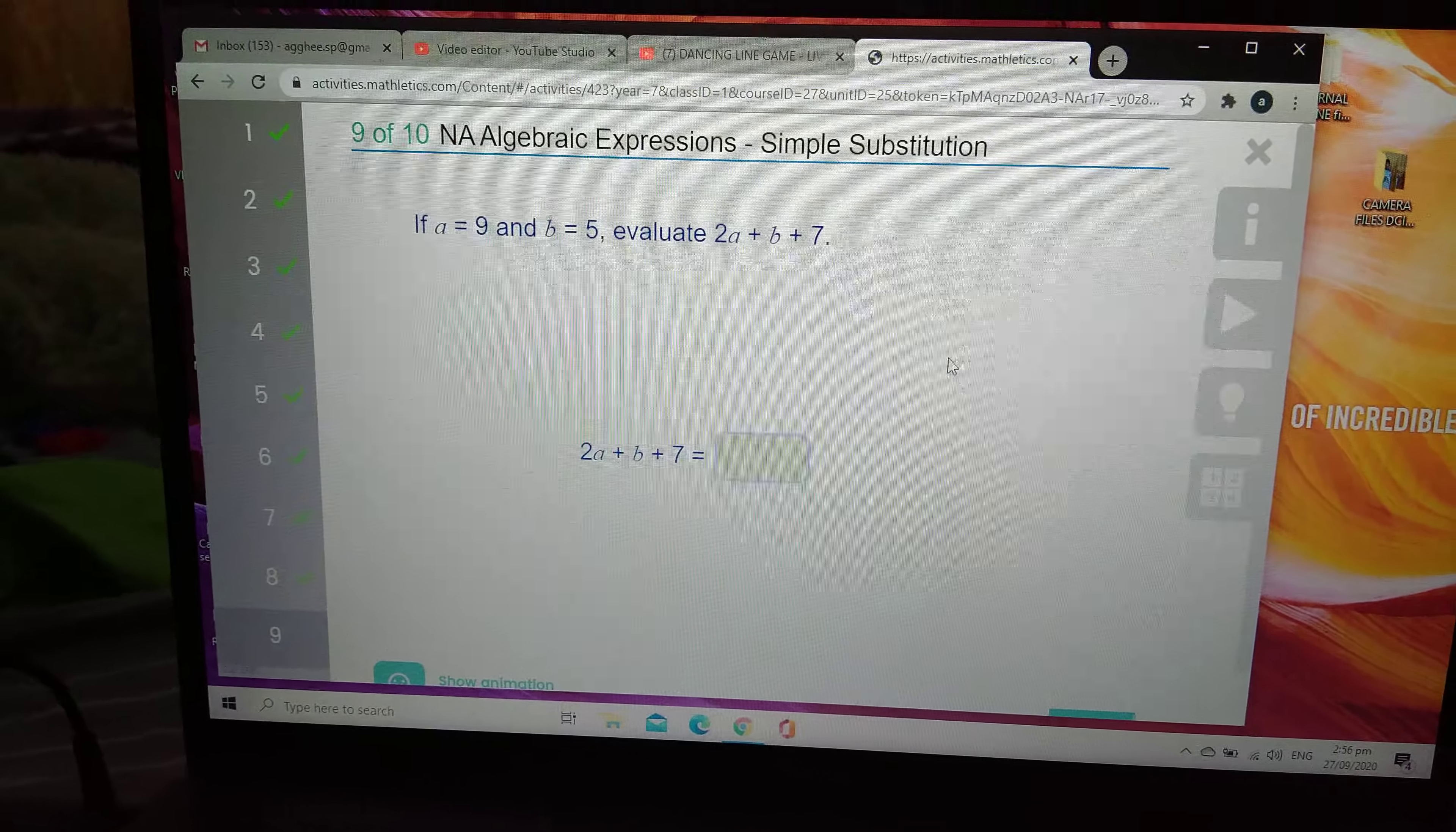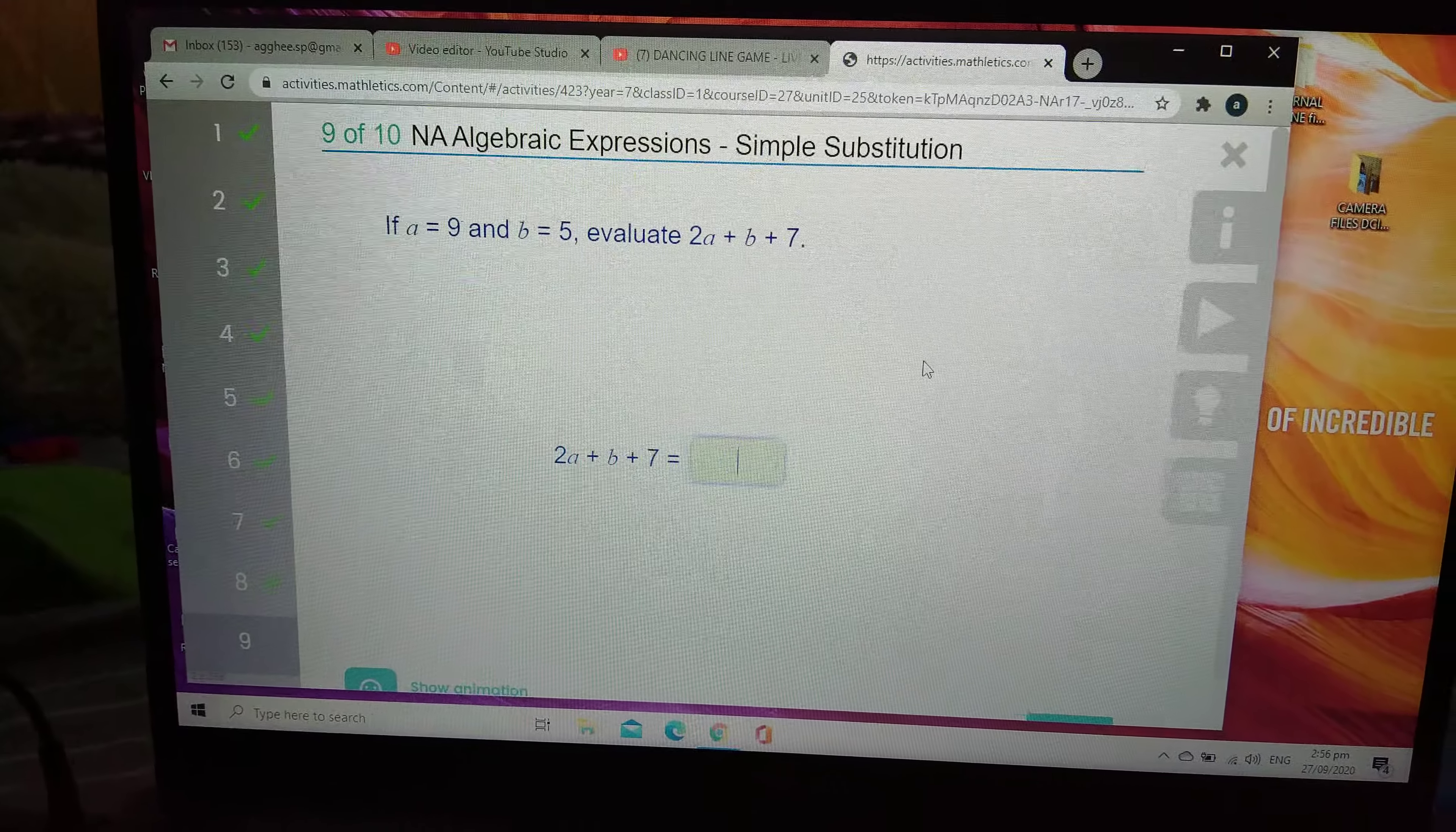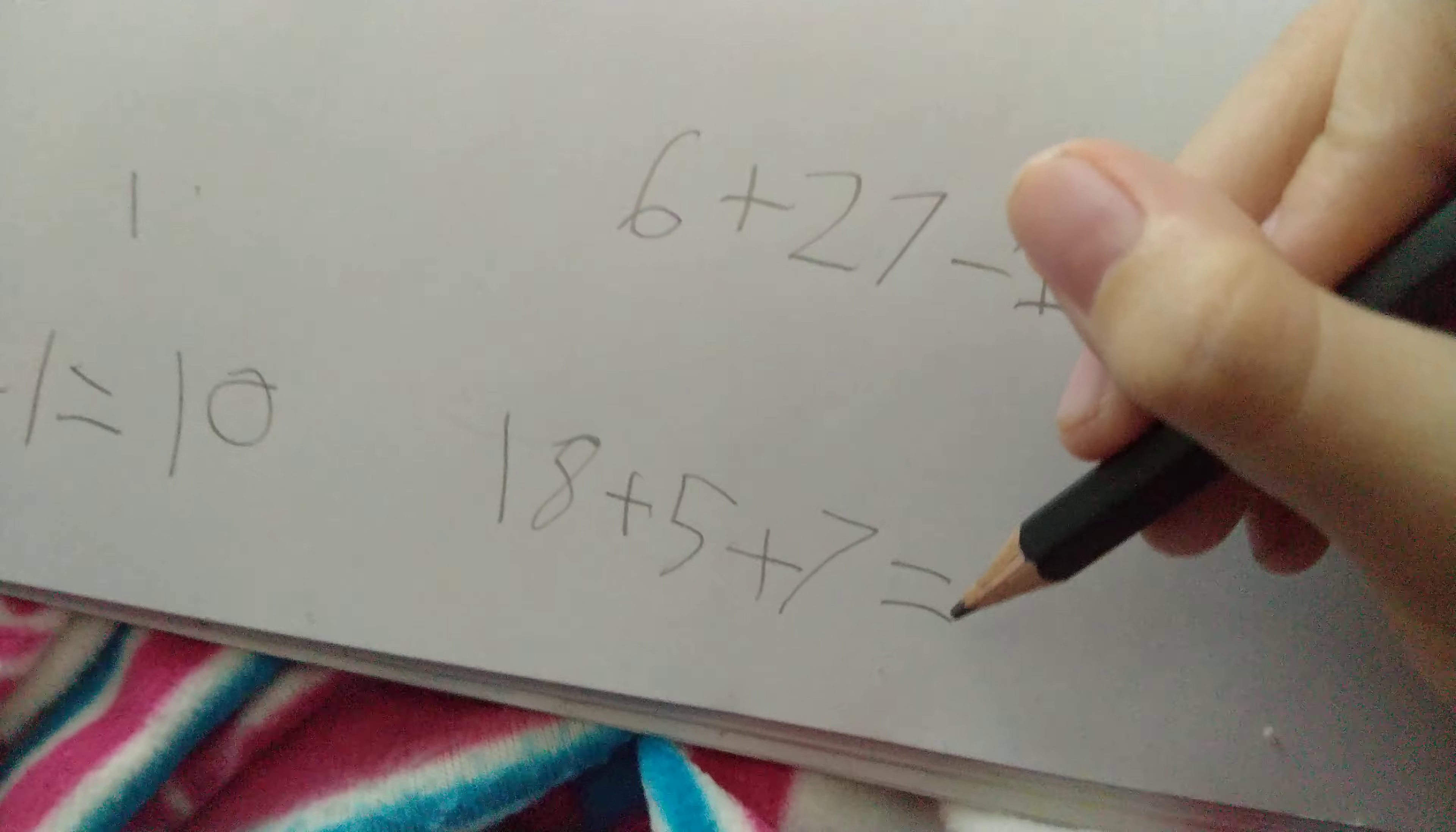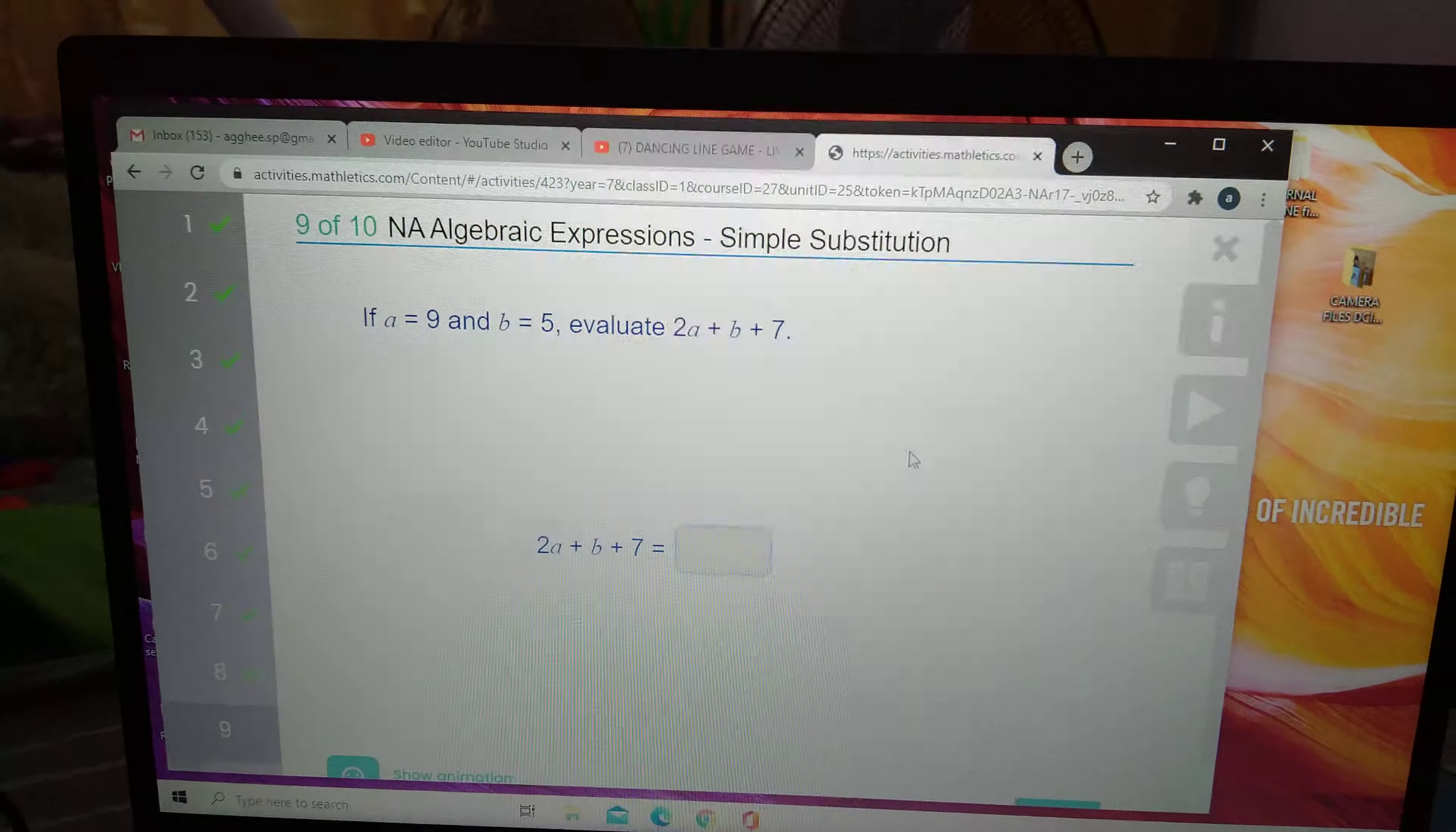Next problem: B plus 5, plus 7. 18 plus 5 is 23. I mean, 7 plus 5 is 12, and 8 plus 5 is 13. Okay, that's 23 plus 7, which equals 30.